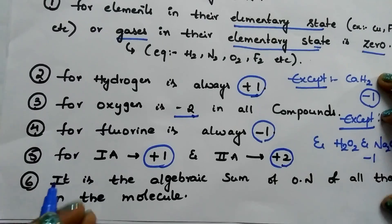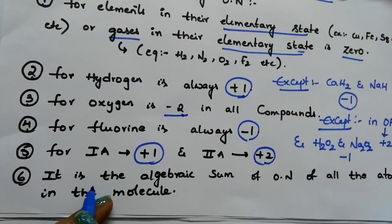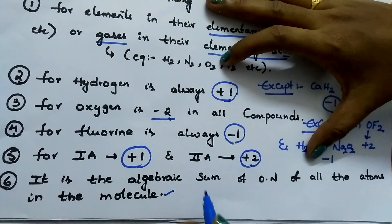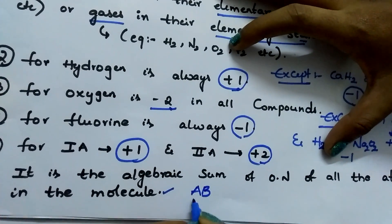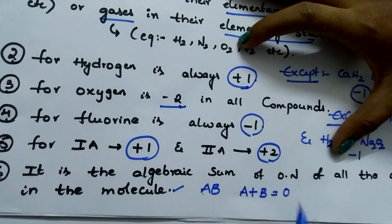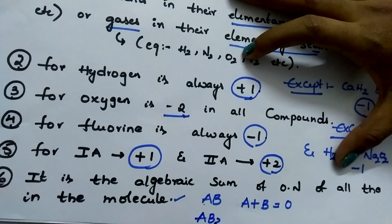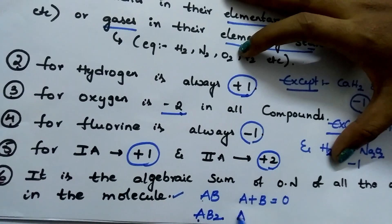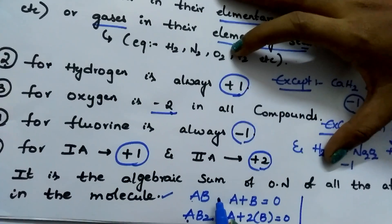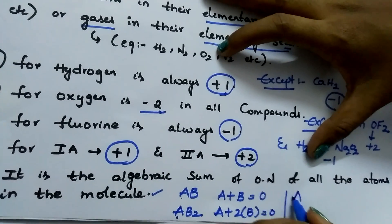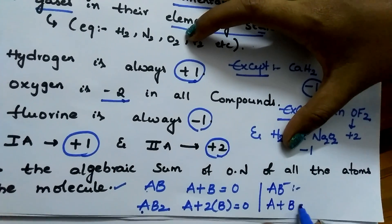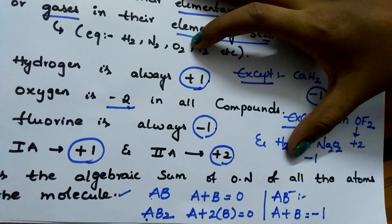Tip number 6. While we are finding the oxidation number of a molecule, it is the algebraic sum of oxidation numbers of all the atoms in the molecule. Suppose you are finding the oxidation number of atom A in molecule AB, then you write A plus B equals 0, because it is a neutral molecule with no charge. But if you are finding the oxidation number of A in AB minus, then A plus B equals minus 1.